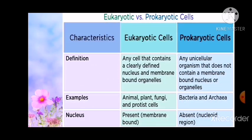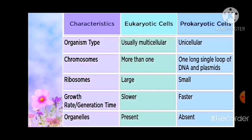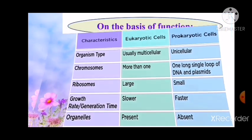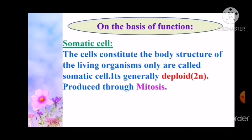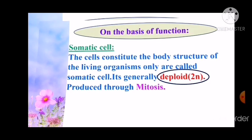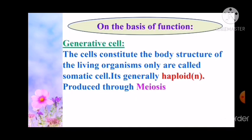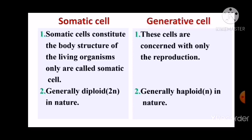In this slide, you can see the difference between eukaryotic and prokaryotic cells. You can differentiate by definition, example, nucleus, organism type, chromosome, ribosome, growth rate, or organelles. On the basis of function, cells are two types: somatic cell and generative cell. Somatic cells are those that constitute the body structure of living organisms; they are generally diploid and produced through mitosis. Generative cells are reproductive cells; they are generally haploid and produced through meiosis. You have to learn this difference.